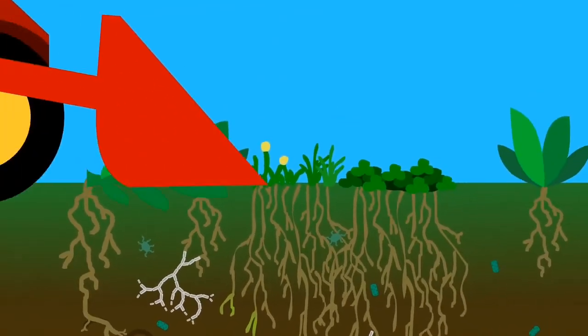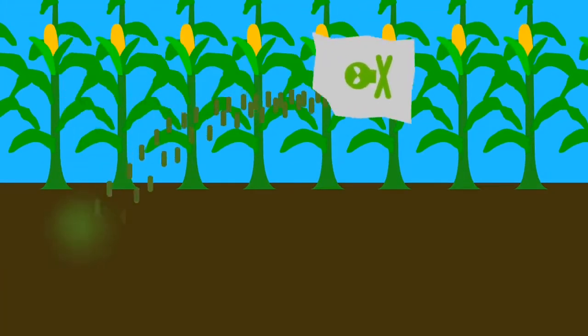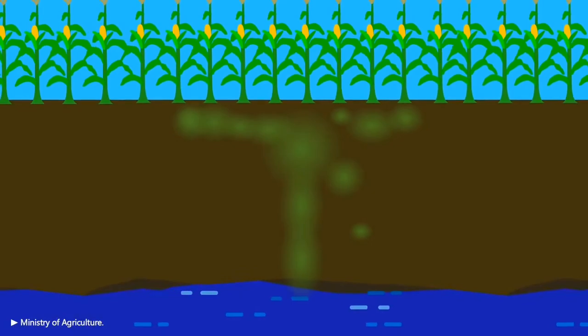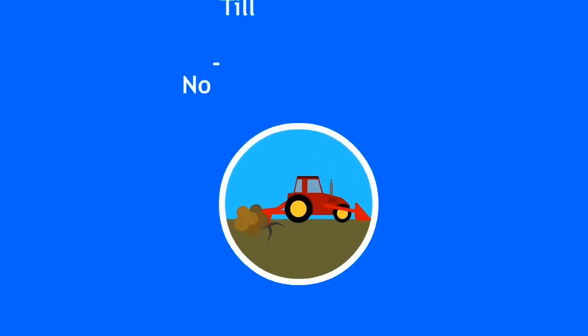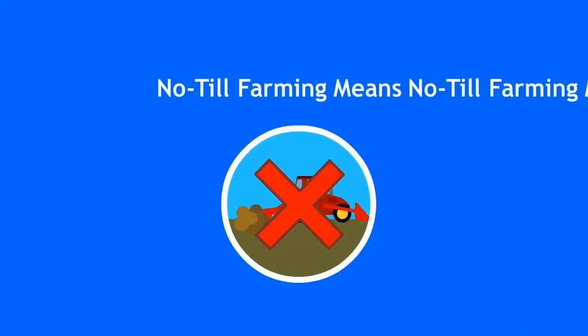When soil is turned over by a machine, most of these organisms are killed, so the crops must rely on chemical fertilizer which ends up leaching into the water. Central to no-till farming is to not do that.